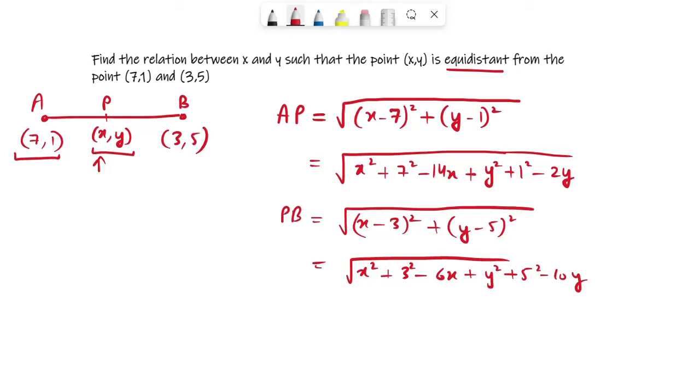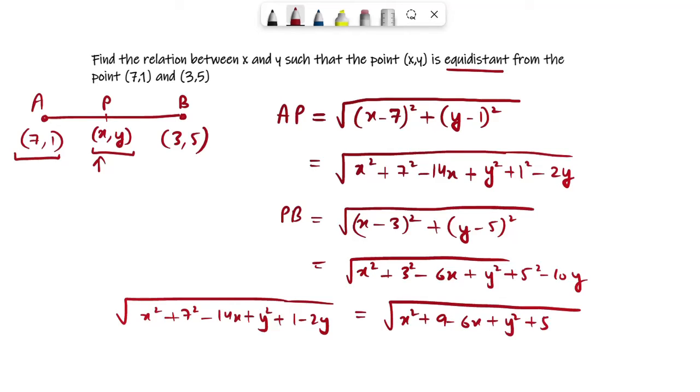Now what we have to do next is equate both of them. AP will be equivalent to PB. So √[x² + 49 - 14x + y² + 1 - 2y], and on the other side you have √[x² + 9 - 6x + y² + 25 - 10y].